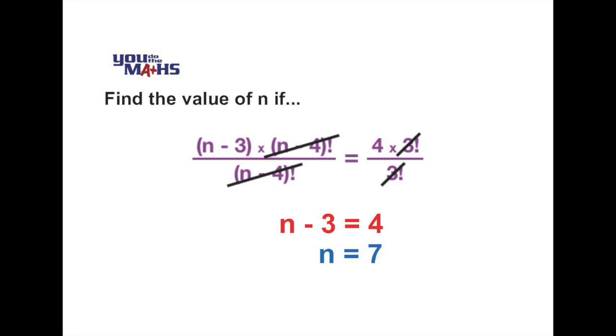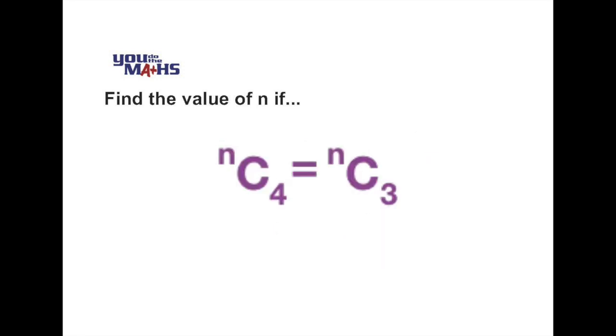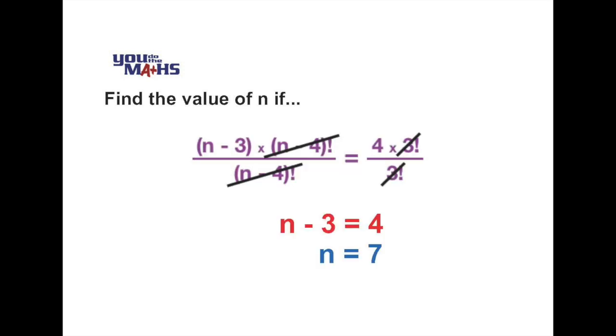So the solution to the original equation which was n choose 4 equals n choose 3 is that n equals 7.